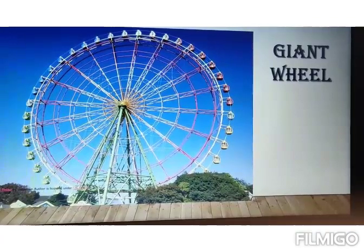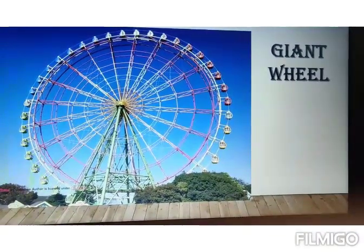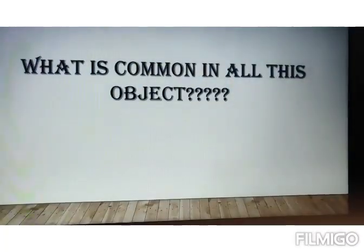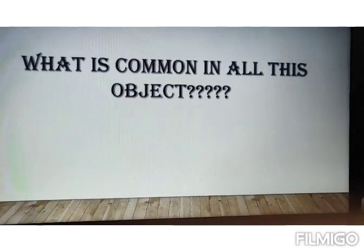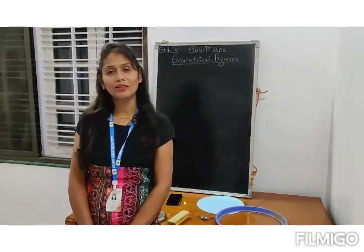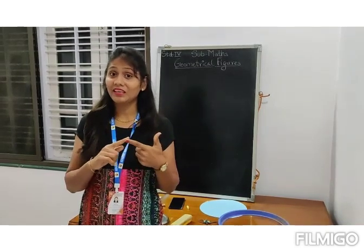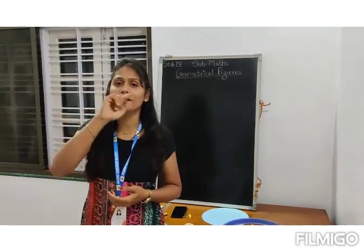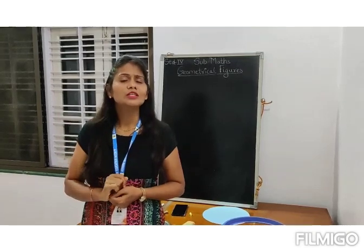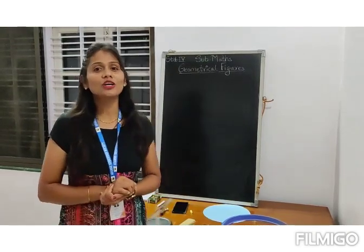You must be wondering, what happened to our teacher? Why is she talking about such objects? Students, what is common in all these objects? Guess. I think you guessed it. Yes, the common thing in all the objects was the circle. The shape of all the objects — the cake, the giant wheel, the bubbles — they were all in that round, circular shape. So today we are going to talk about circle.